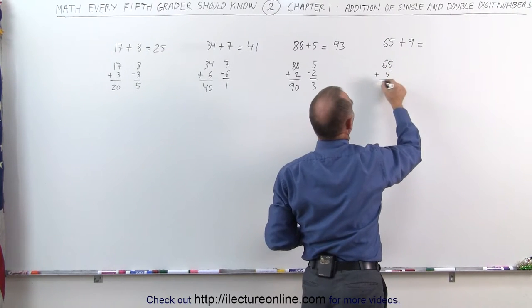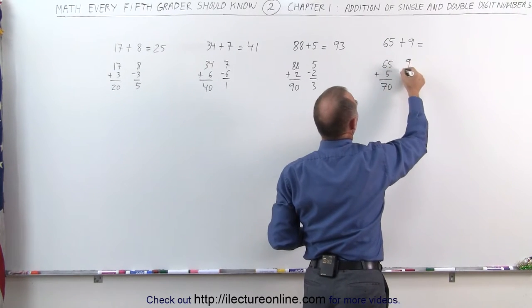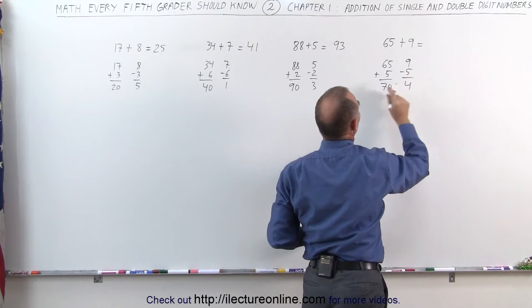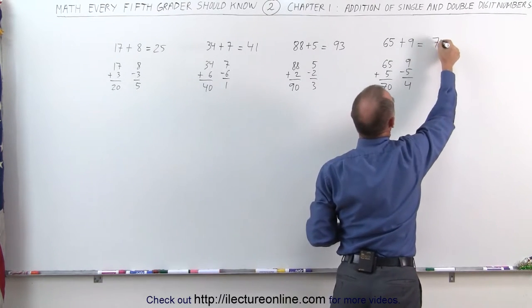65 plus 5 equals 70. Subtract the 5 from 9 to get 4, and 70 plus 4 is 74.